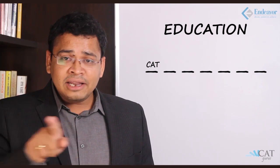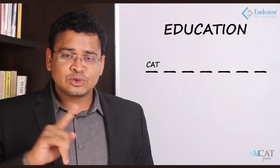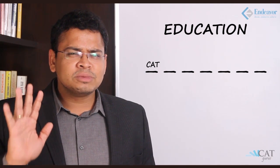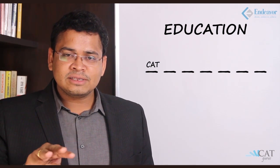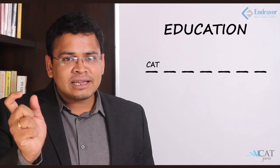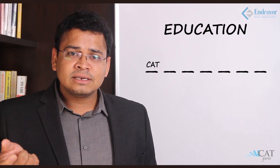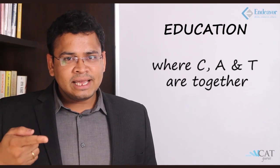We move further to a more complicated case: how many arrangements of 'education' are possible such that 'CAT' is clearly visible? If the word CAT is to appear, every other alphabet can move around but C, A, and T must be together in that exact order. Those three become one unit, and the remaining six are separate — so six plus one unit is seven, giving seven factorial arrangements.